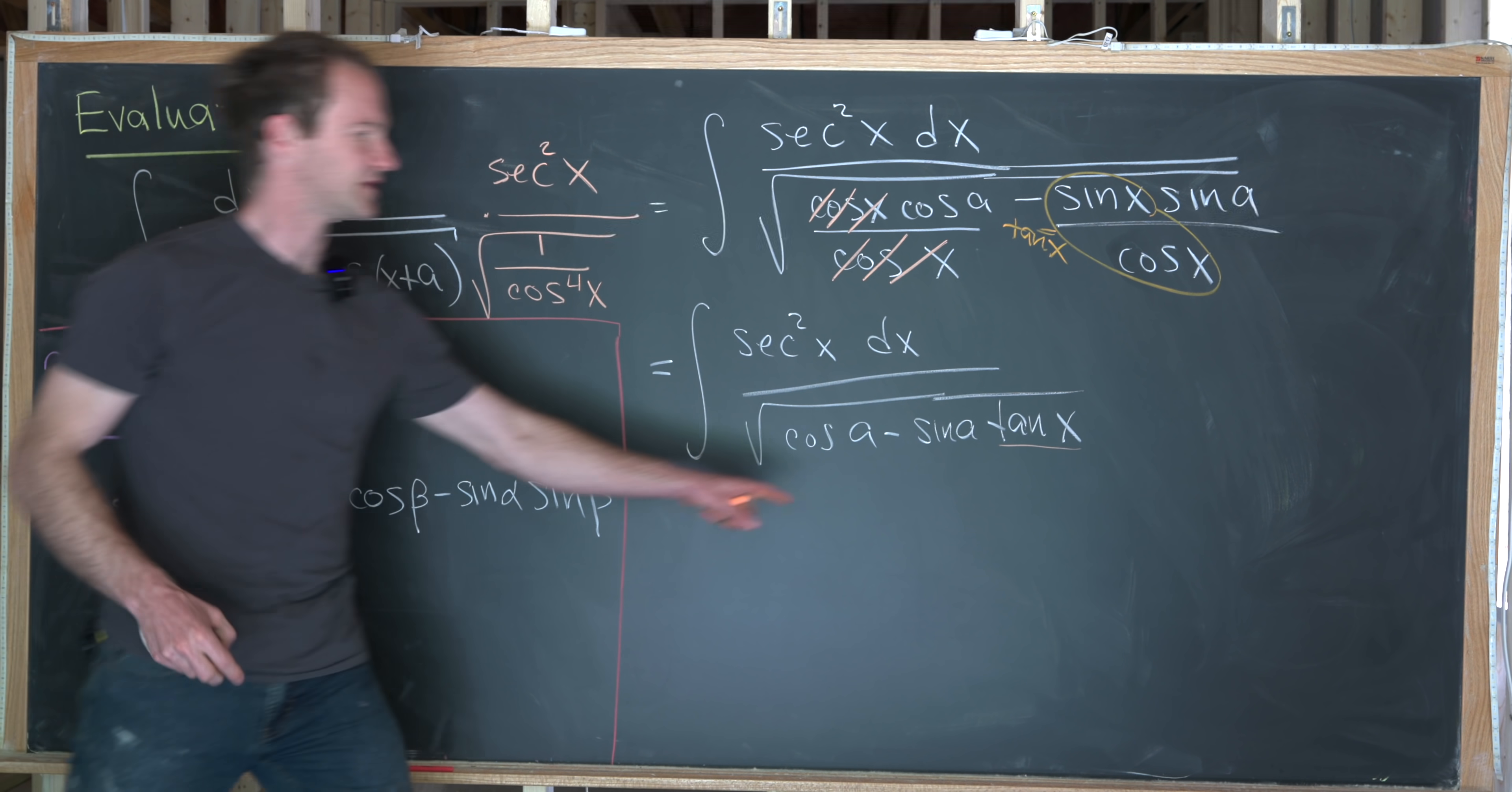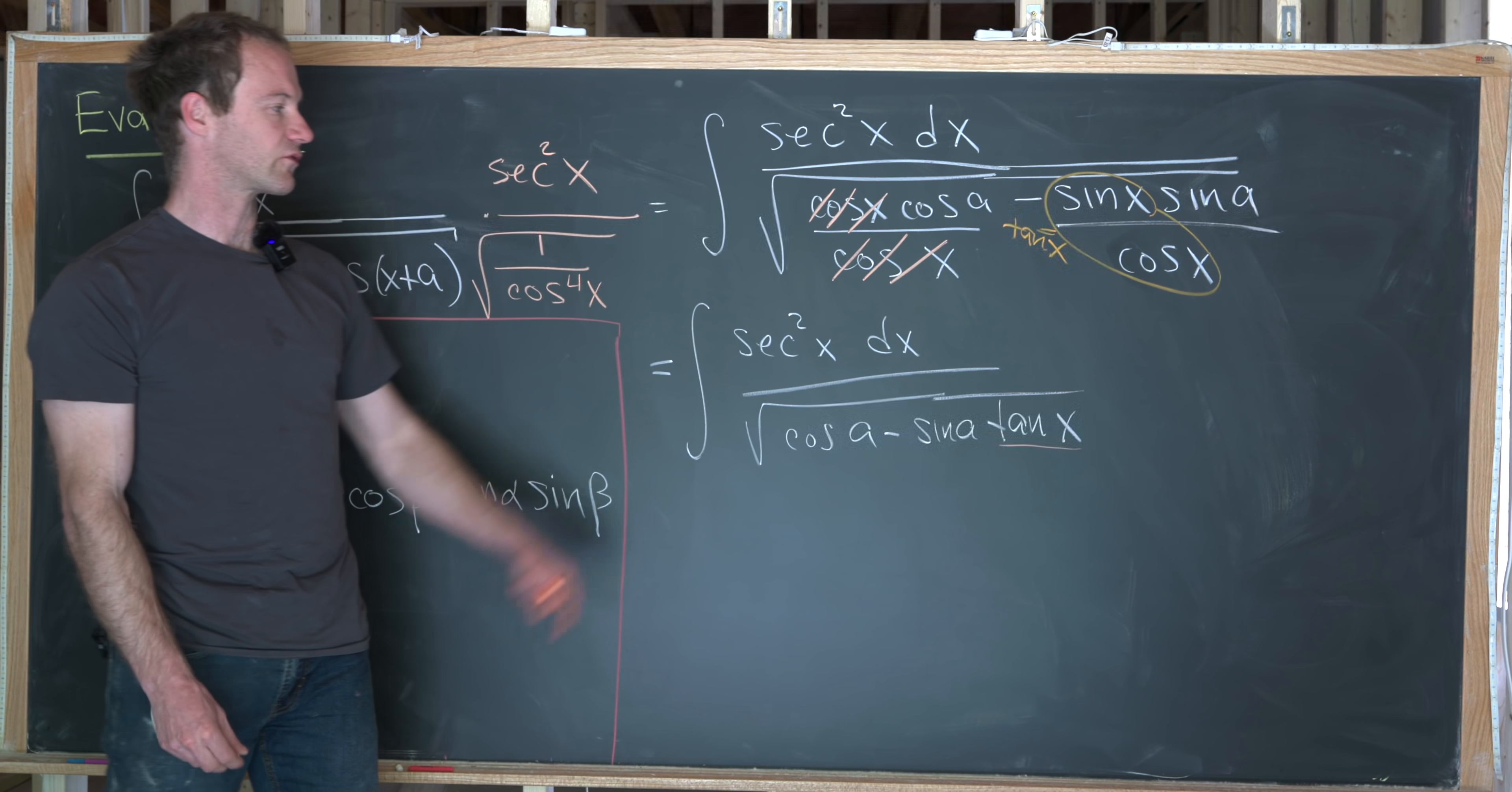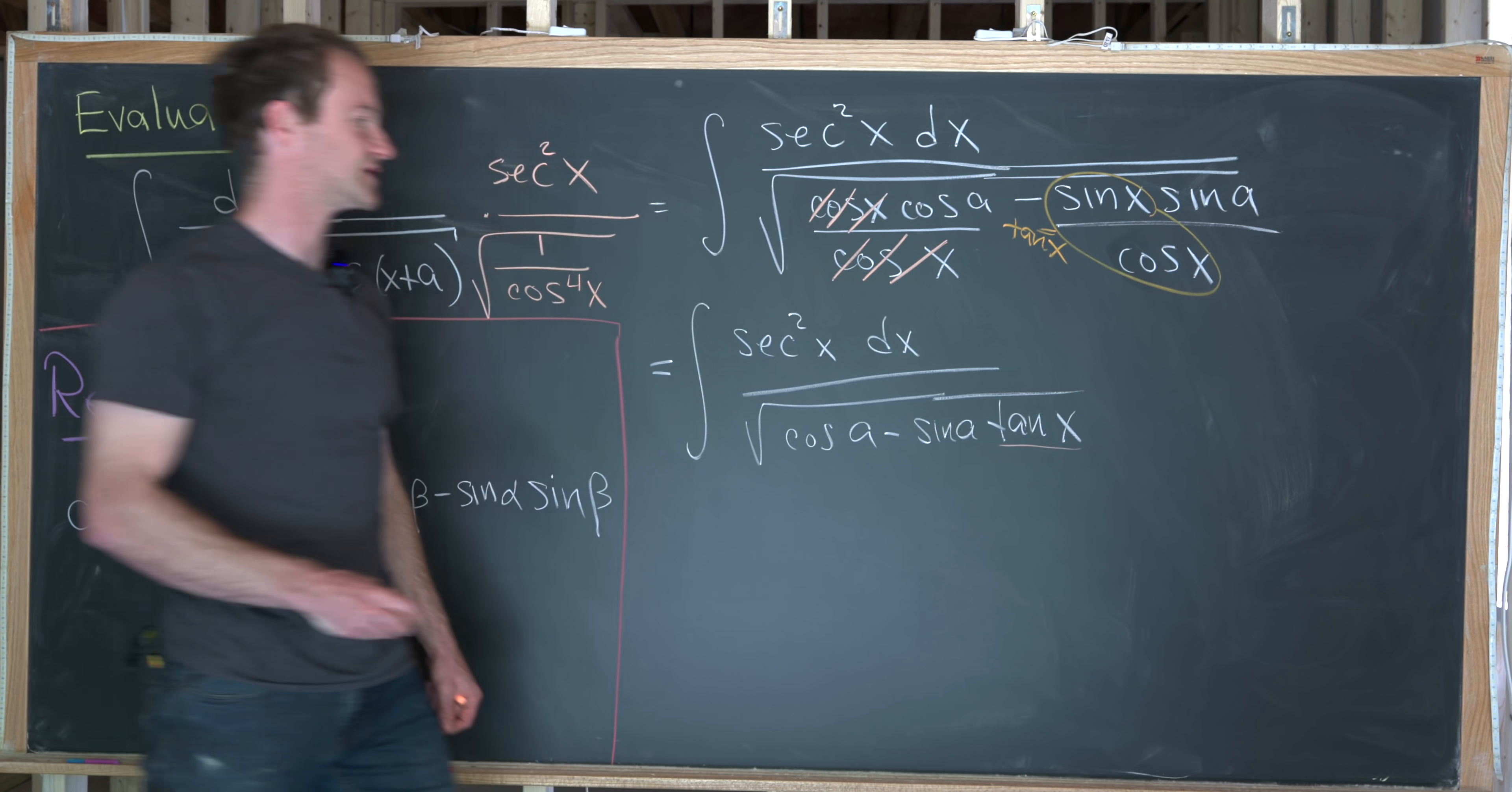But look at what we've got. Tangent, the only thing with a variable in the denominator, the derivative of tangent in the numerator. So that gives us a u substitution.